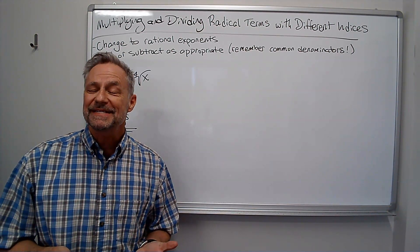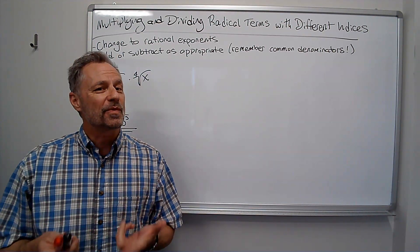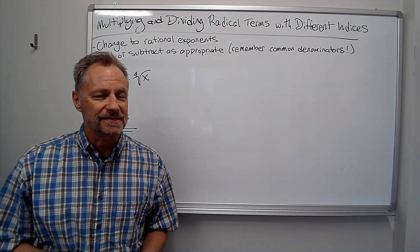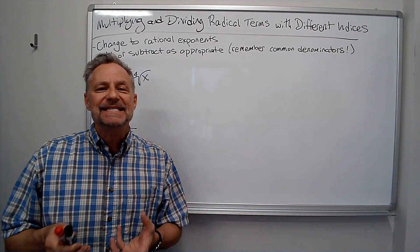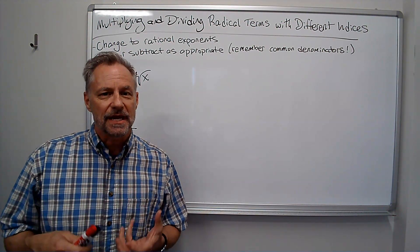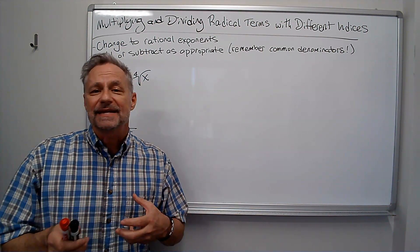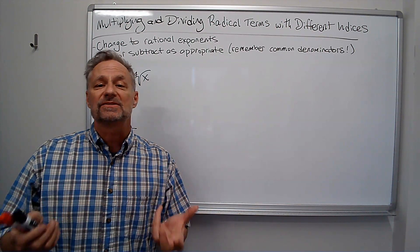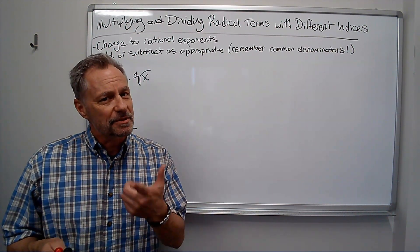Hi there, it's Professor Monty, and now we're talking about multiplying and dividing radical terms with different indices. The key here is we need to change everything to fractional exponents. Once we've done that, we can add or subtract exponents as appropriate depending on the property of exponents we're using. So let me give you a couple examples.